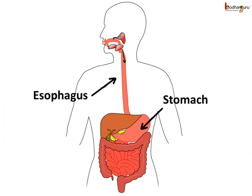From the mouth, the food travels through the long pipe-like esophagus and reaches the stomach. The wall of the esophagus contracts and then relaxes to produce a wave-like movement, which pushes the food down towards the stomach.